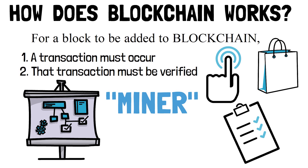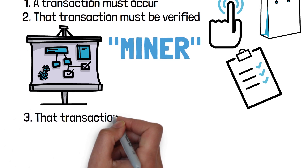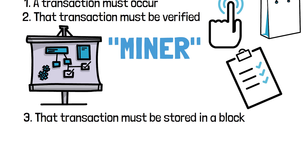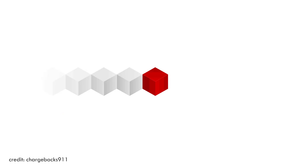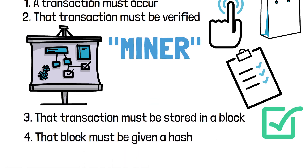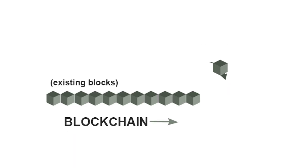For example, you cannot send 50 bitcoins to someone if you only have 10 bitcoins in your wallet. 3. That transaction must be stored in a block. After your transaction has been verified as accurate, it gets a green light. The transaction's dollar amount, your digital signature, and Amazon's digital signature are all stored in a block, where the transaction will likely join hundreds or even thousands of others. 4. That block must be given a hash. Once all of the block's transactions have been verified, it must be assigned a unique identifying code called a hash. Once hashing is complete, the block can be added to the blockchain. This hash ID differentiates the processed transaction from others, and even a small change can make a huge difference in its identification.